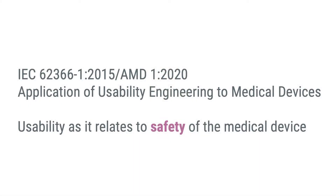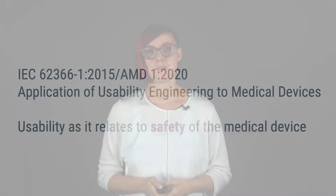The Standard defining the application of usability engineering to medical devices is the IEC 62366-1, 2015, with its first amendment from 2020. Strictly speaking, when looking at usability engineering from a regulatory point of view, it only relates to the safety of a medical device. Therefore, usability engineering is seen as a process that permits the manufacturer to assess and mitigate risks associated with correct use and use errors in normal use.